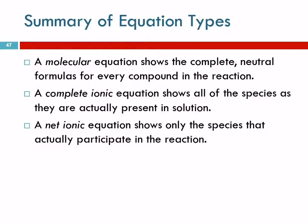So, this is a summary. You need to know what these equation types are. We're going to go through some examples. The molecular equation shows all the complete neutral formulas for everything that's in the reaction. The complete ionic equation shows all the species as they're actually present. And the net ionic equation shows only those species that actually participate.